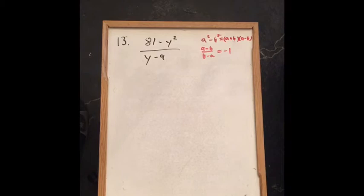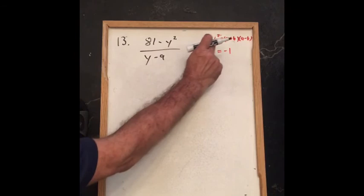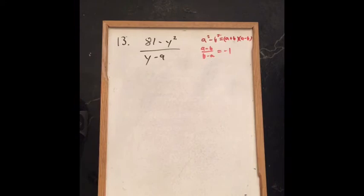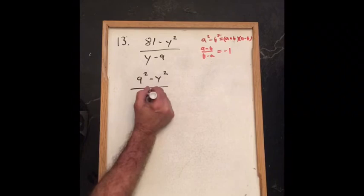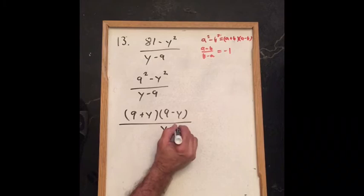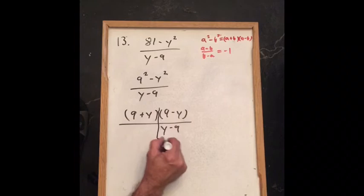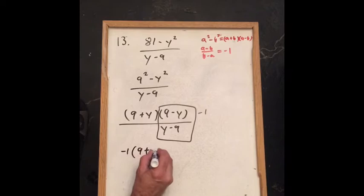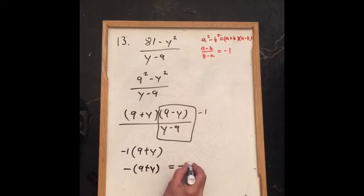For problem 13, we reduce to lowest terms. Using the difference of squares formula and the fact that A minus B over B minus A equals negative 1: the numerator 81 minus y squared becomes (9 plus y)(9 minus y), all over y minus 9. The factor (9 minus y) over (y minus 9) equals negative 1, so the result is negative 1 times (9 plus y), written as negative 9 plus y or equivalently negative y plus 9.